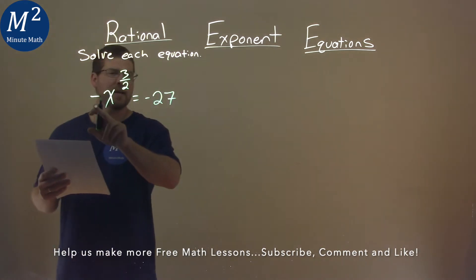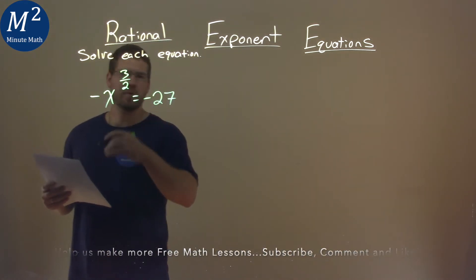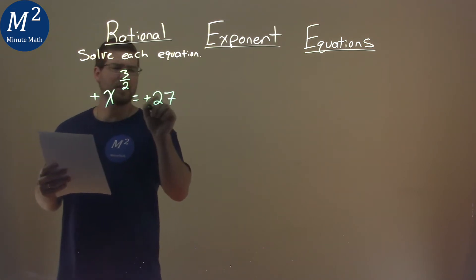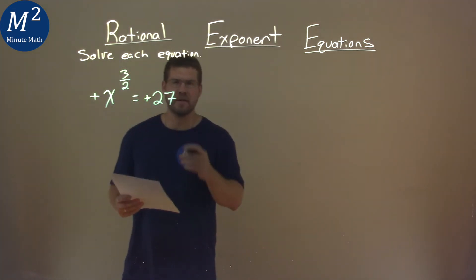Well first thing I notice is a negative out here and a negative out here. We divide both sides by a negative 1, or multiply by a negative 1, and really it just becomes positive positive. It makes it easier to deal with.